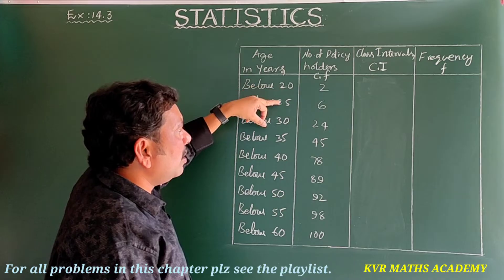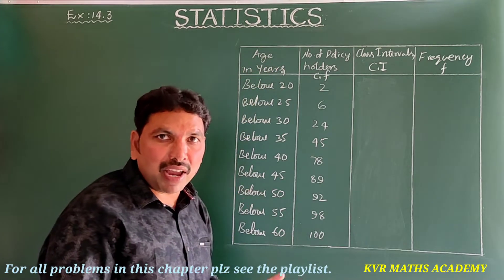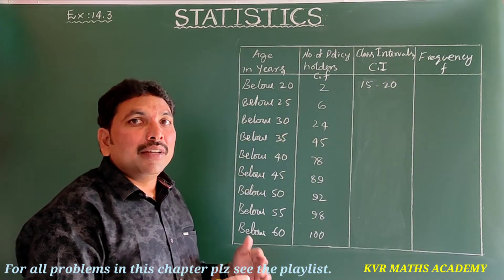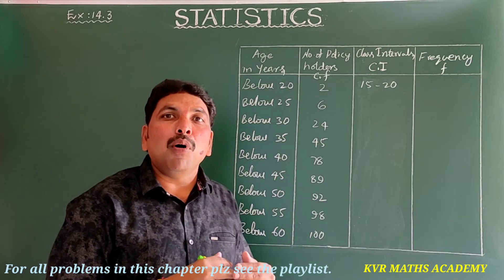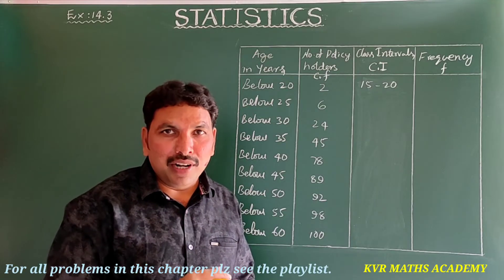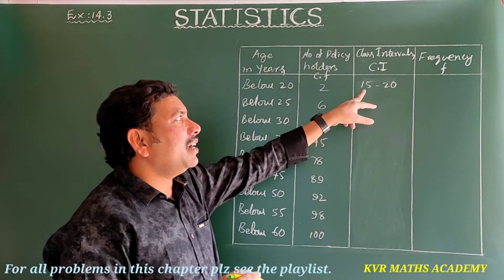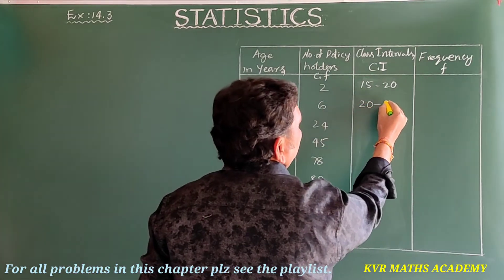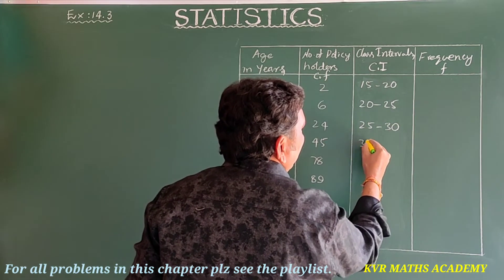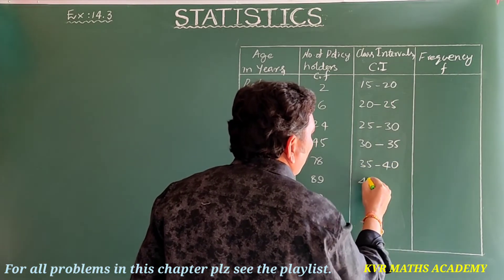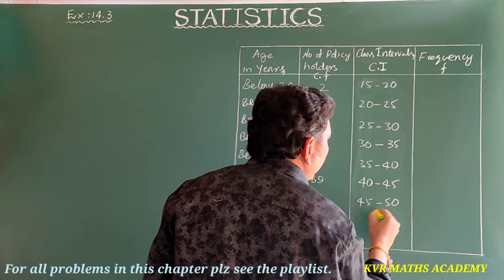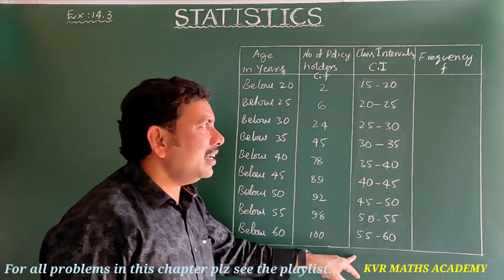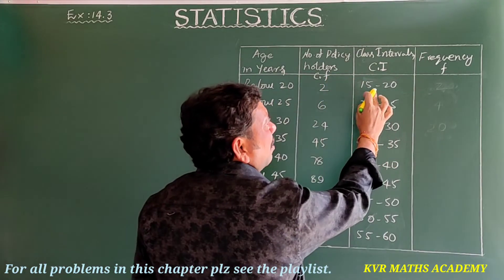Each class has a width of 5. Since the policy requires age ≥ 18, the first class is taken as 15–20. The class intervals are: 15–20, 20–25, 25–30, 30–35, 35–40, 40–45, 45–50, 50–55, 55–60.